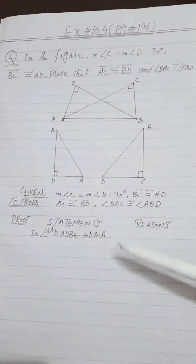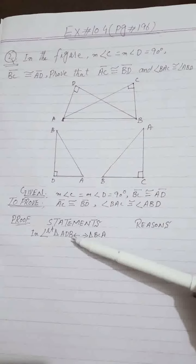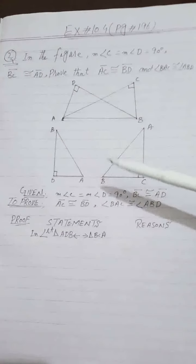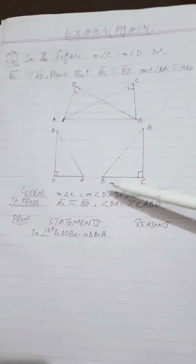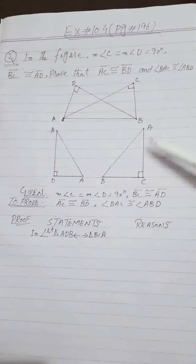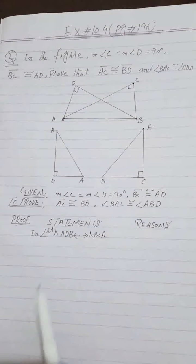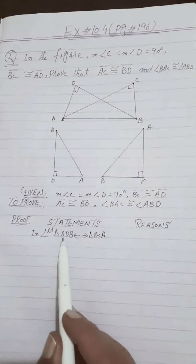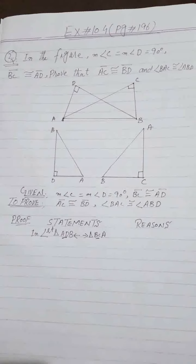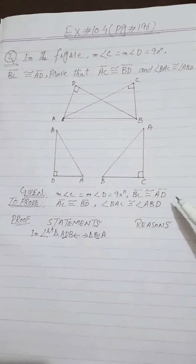I have written right angle triangles ADB and BCA. Since we started with the base, we also include BCA. The first pair is AD and BC — these are given as congruent, so we write it under the 'given' heading.